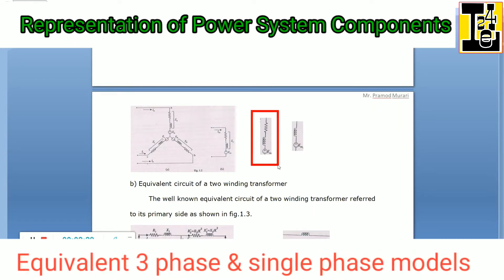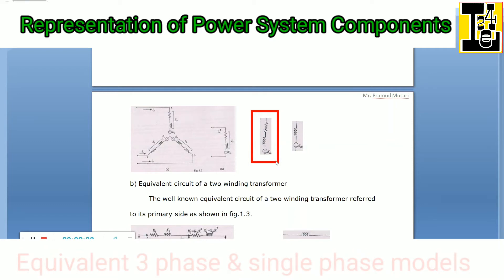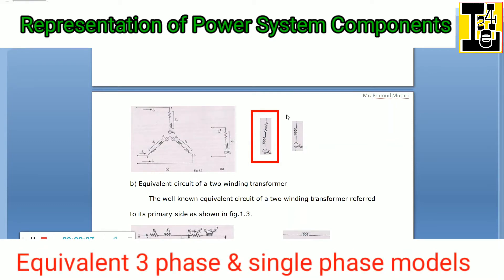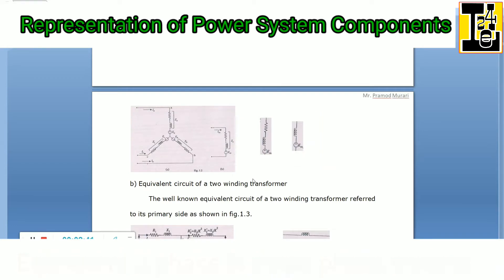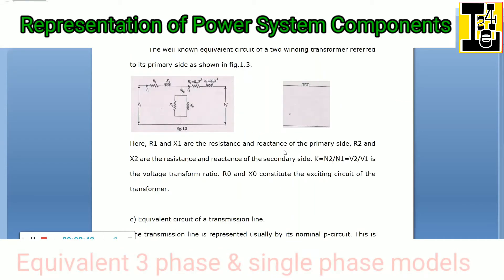A resistor, reactor, and EMF source are connected in series — this will be called an impedance diagram. If we omit or remove the resistor, this will be called the reactance diagram. The equivalent circuit of a two-winding transformer follows next.